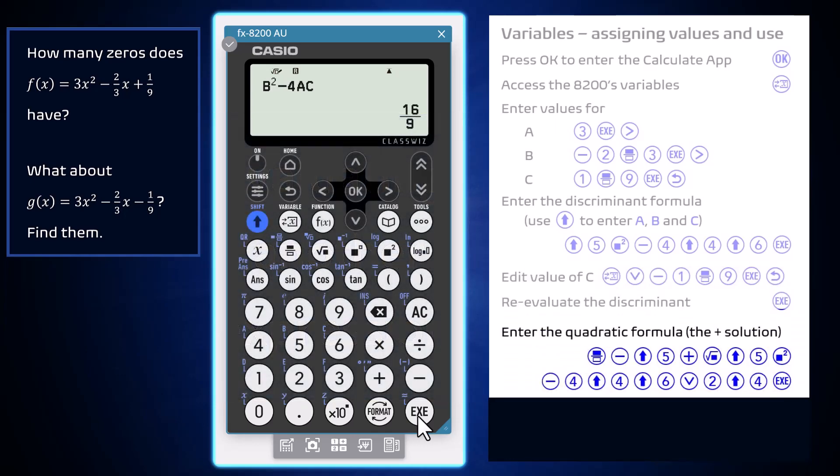To find these zeros, I'm going to enter the quadratic formula in terms of A, B and C values, starting with the fraction key. I won't be able to enter the plus or minus, so I will start with the plus solution by entering negative B plus the square root of B squared take 4AC all over 2A.